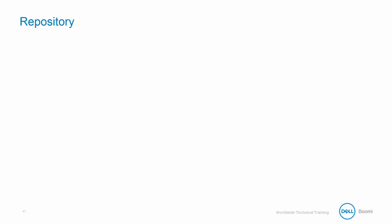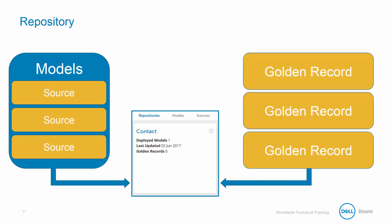Now that you understand the define step, we can start building the pieces that make up our overall MDM solution. The first piece we will build is the contact repository, which is essentially a container that holds all of your models, sources, and golden records. Since we will be collecting contact data, we will name this particular repository 'Contact.' On a more technical level, a repository is actually a specially configured Atom used to host models and their associated master data that are deployed to the Dell Boomi MDM Atom Cloud. We will learn more about the repository in the following exercise.